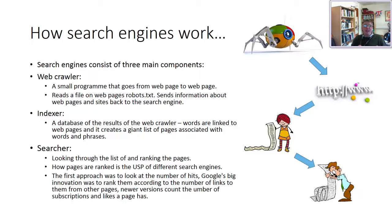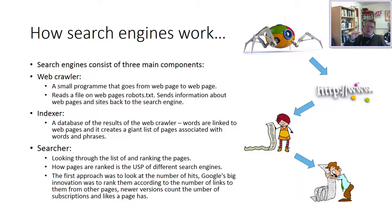Back in the search engine there's a program called an indexer — a database of results from the web crawler. Words are linked to web pages, creating a giant list of pages associated with words and phrases. When you type in those words, it finds the web pages linked to them. Finally, you've got the searcher, which looks through the list and ranking of pages. If you type a word into Google, you might get 15,000 to 20,000 different responses — why it puts certain pages at the top and others at the bottom is the result of web ranking, a very complex science.